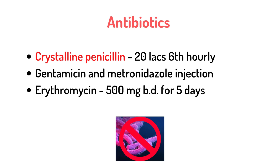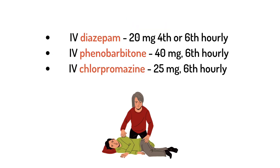The antibiotic regimen for treating tetanus includes crystalline penicillin 20 lakh units 6th hourly, along with gentamicin and metronidazole injection. Erythromycin 500 mg twice a day for 5 days is also suggested. For convulsions, diazepam 20 mg 4th or 6th hourly, phenobarbitone 40 mg 6th hourly, and chlorpromazine 25 mg 6th hourly are given — all administered intravenously.